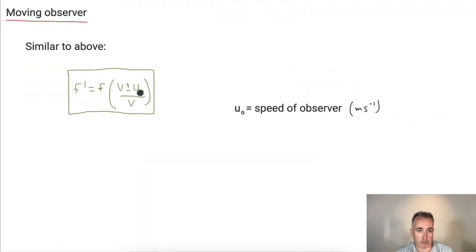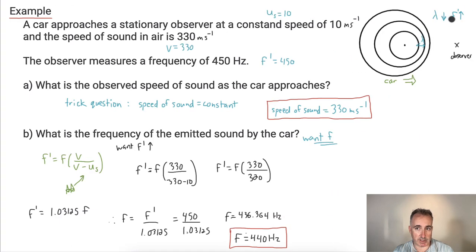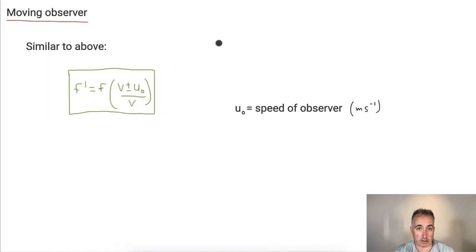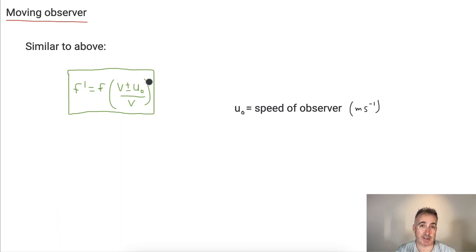And the only tricky part is you have to be sneaky about, you have to know what your answer needs to be. So think about wavelength down means frequency needs to be up. Then you can figure out if you should add or subtract in those equations. So you should either do a plus or a minus here or here, depending on what you need to happen.